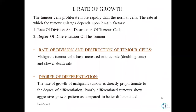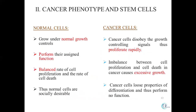Regarding rate of growth: malignant tumor cells have an increased mitotic rate and increased doubling time, with a slow death rate — so they keep increasing. There is also decreased apoptosis. As the tumor progresses, differentiation decreases: poorly differentiated tumors show a more aggressive pattern, whereas well-differentiated tumors are less aggressive in comparison.